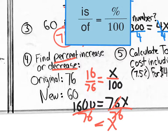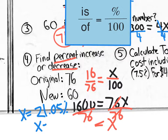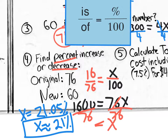1600 divided by 76 gives approximately 21.05. We're not going to write it exactly like that — instead, x is approximately 21%. So the percent decrease from 76 to 60 is about 21%. Note that percentages with decimals do exist in real life, like a 4.75% mortgage interest rate, but here we round to 21%.